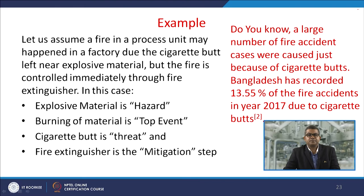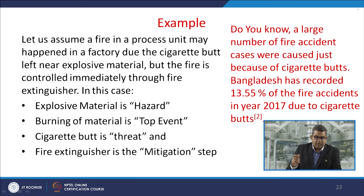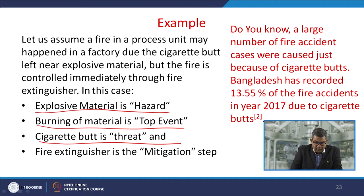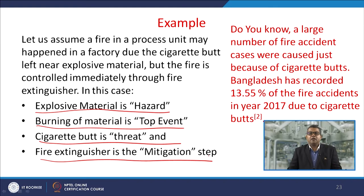As an example, consider a fire in a process unit that may happen in a factory due to a cigarette butt left near explosive material, but the fire is controlled immediately through a fire extinguisher. In that case, the explosive material is the hazard, the burning of the material is the top event, the cigarette butt is the threat, and the fire extinguisher is the mitigation step. Bangladesh recorded 13.55% of fire accidents in 2017 due to cigarette butts.